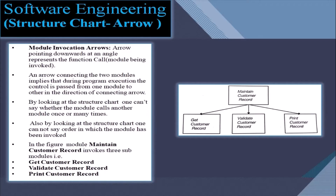The second symbol is the arrow pointing downwards at an angle, also called a module invocation arrow. It represents the function call or module being invoked. An arrow connecting two modules implies that during program execution, the control is passed from one module to another in the direction of the arrow. By looking at the structure chart, one cannot determine whether a module calls another module once or many times, nor the order in which modules have been invoked. For example, the module 'maintain customer record' invokes three submodules: get customer record, validate customer record, and print customer record.